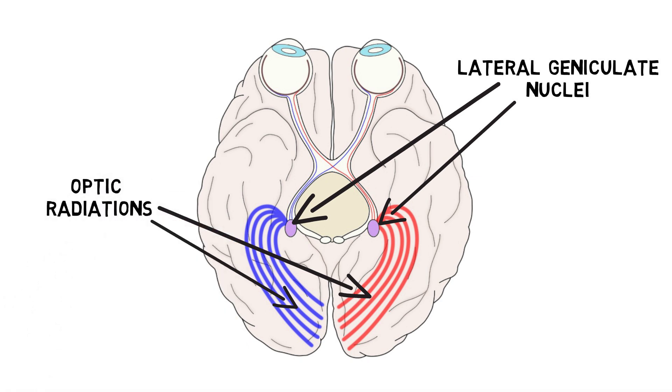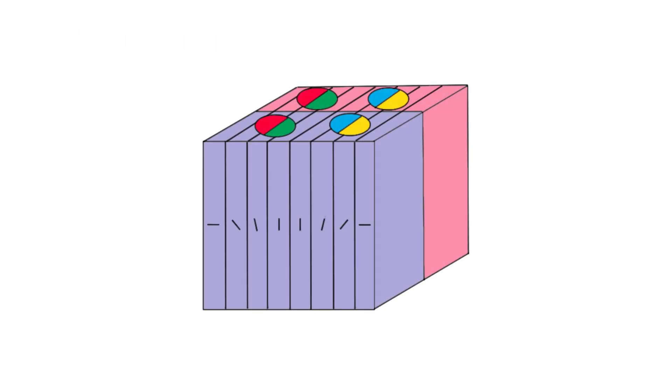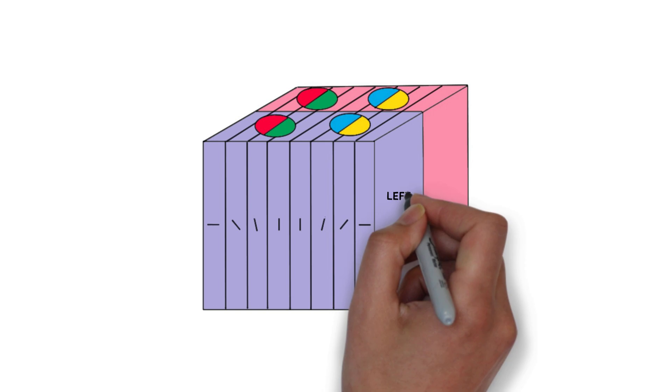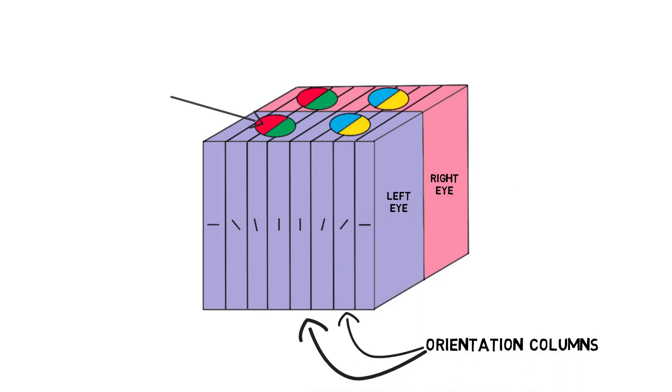Neurons in the primary visual cortex are arranged into columns that preferentially respond to certain characteristics of visual stimuli, such as location, orientation, and which eye the information is coming from.